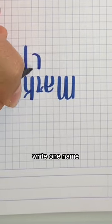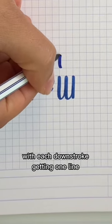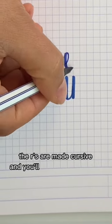When doing two different names, write one name right side up and the other name upside down, with each downstroke getting one line. The R's are made cursive, and you'll see why in a minute.